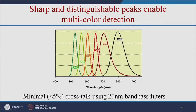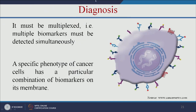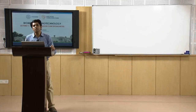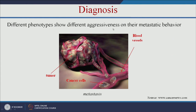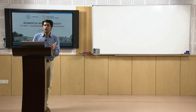Another advantage is that different sizes of quantum dots give different fluorescence colors, with no overlapping and no crosstalk — unlike traditional organic dyes. This diagnosis should be multiplexed, meaning multiple biomarkers on cancer cells should be detected simultaneously. Different phenotypes show different aggressiveness and metastatic behavior depending on their markers, allowing us to determine whether the person is in the early stage or advanced stage of cancer.